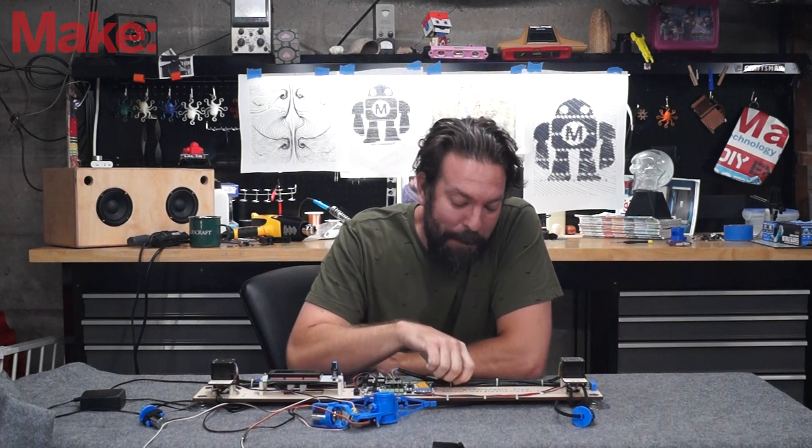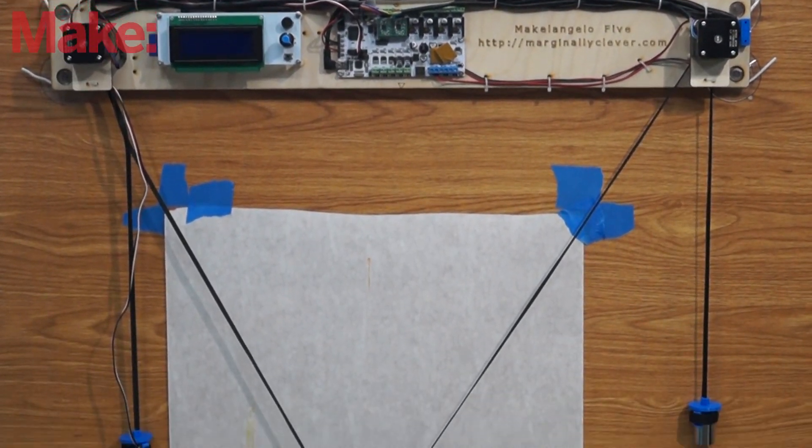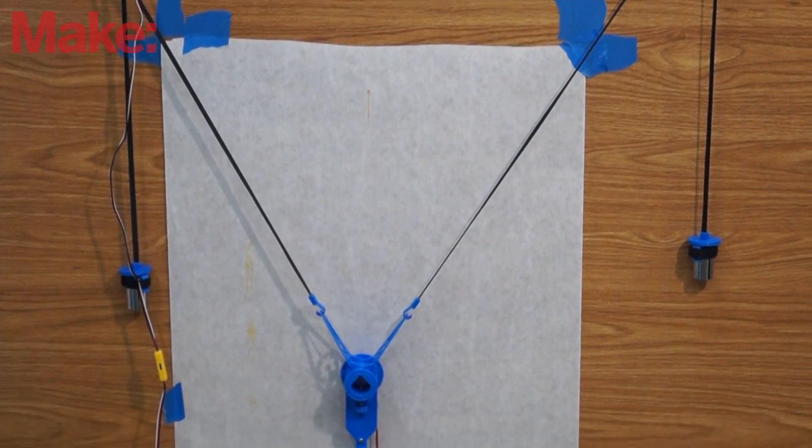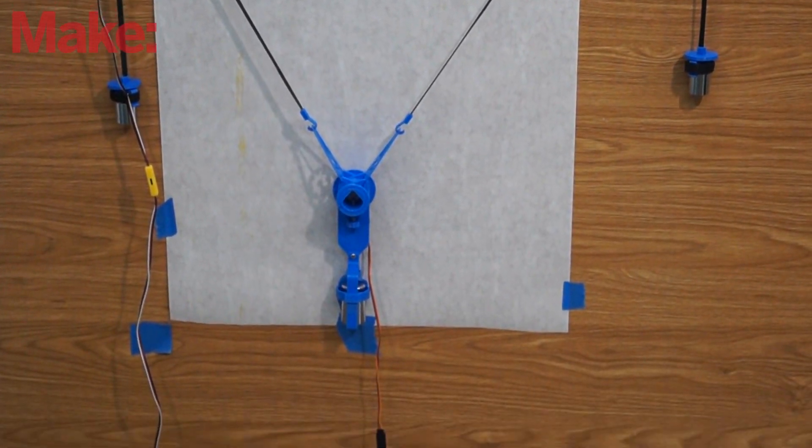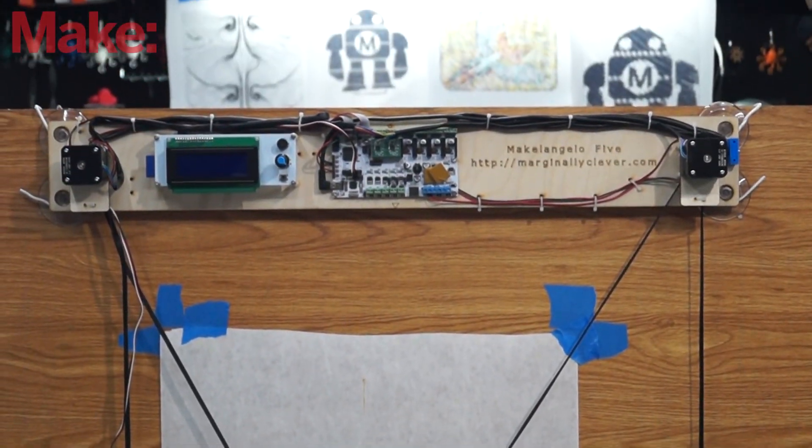Today we're looking at the Michelangelo 5. This is a vertical plotter, a computer-controlled drawing machine that hangs on a vertical surface like a wall or a window.